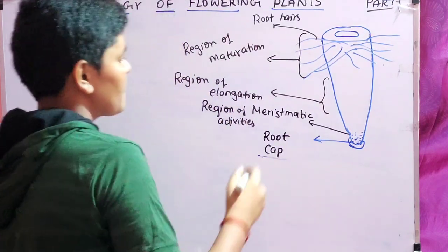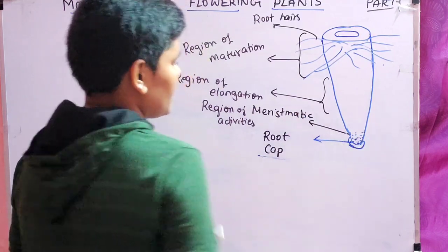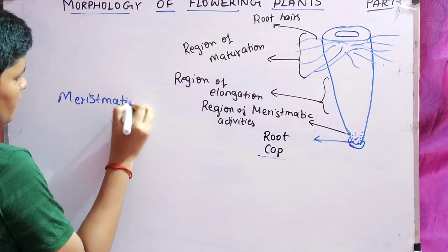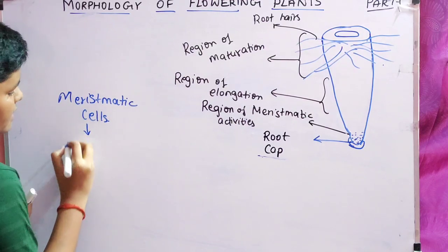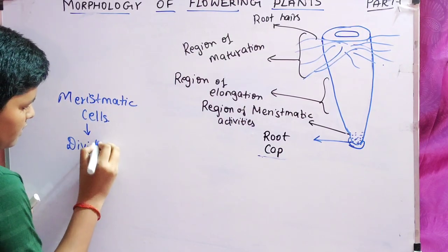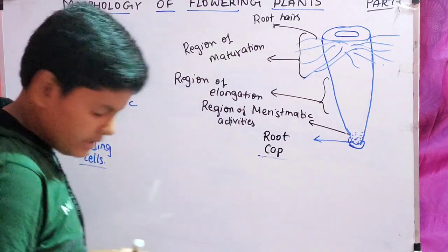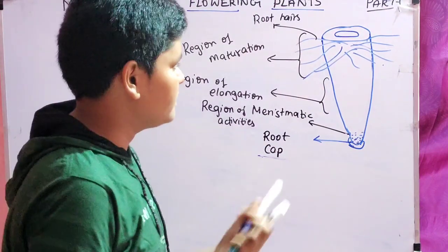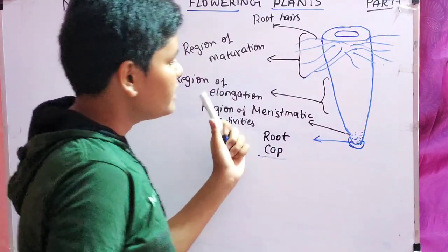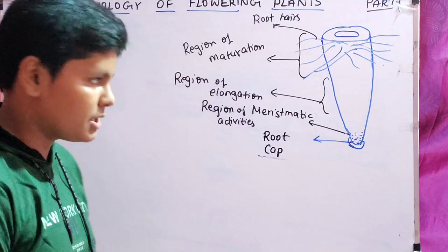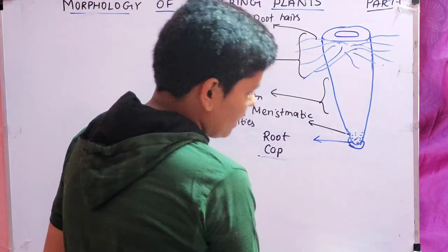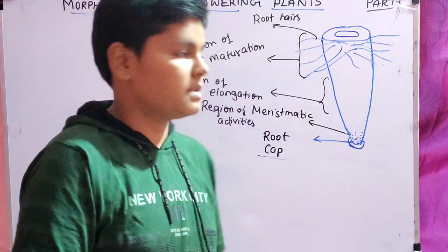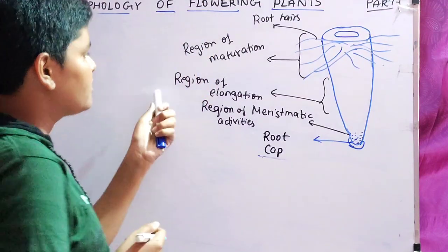What is the region of meristematic activity? These are the meristematic cells — dividing cells. These cells divide continuously and that helps in the increase of length. Then comes the region of elongation, which is a partially matured, partially immature region. After the meristematic region, as growth continues downward, the part above slowly gets matured. That part is responsible for the increase of length and is called the region of elongation.